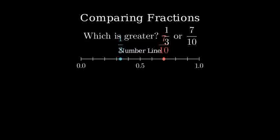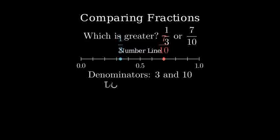To compare these fractions algebraically, we need to find a common denominator. The denominators are 3 and 10. The least common multiple of 3 and 10 is 30.